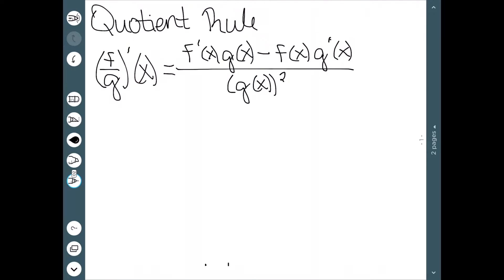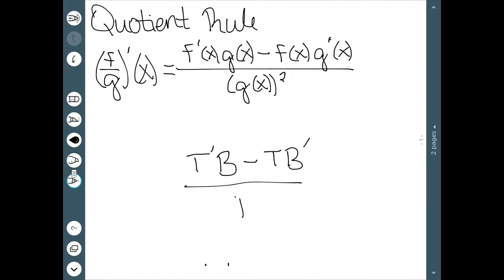We do the derivative of the top times the bottom, minus the top times the derivative of the bottom, all over the bottom squared. Another way to write this using t and b for top and bottom is: derivative of the top times the bottom, minus the top times derivative of the bottom, all over the bottom squared. That may be a little less confusing.